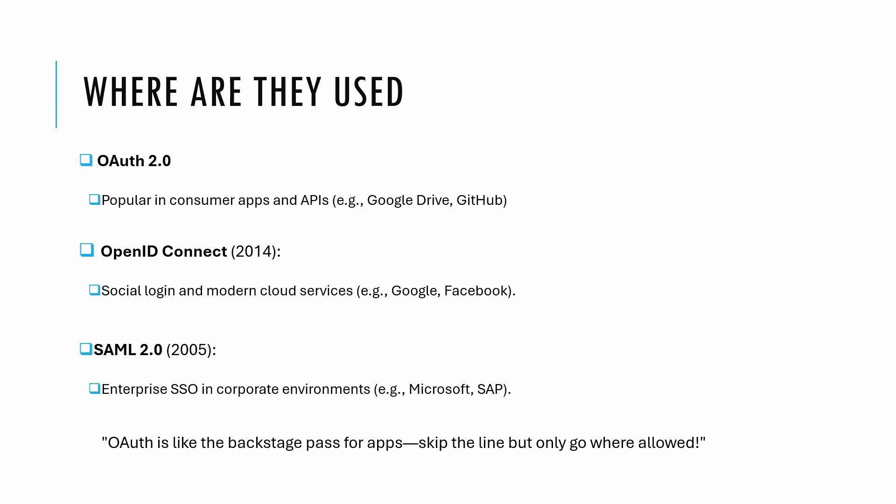Each protocol has found its niche. OAuth 2.0 is widely adopted by customer-facing applications and APIs — think Google Drive, GitHub, or Slack integrations. It's ideal for scenarios where applications need to act on your behalf, like scheduling a meeting on your calendar. OpenID Connect, or OIDC, is perfect for social logins and modern cloud services. If you have clicked 'Login with Google' or 'Login with Facebook' for any application, you have used OpenID Connect. SAML 2.0 dominates enterprise SSO scenarios, as it's more suited for web logins.